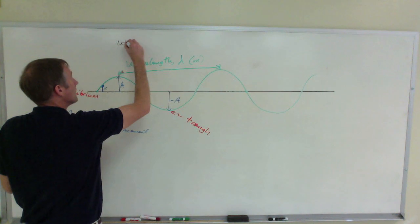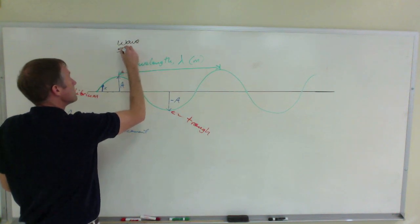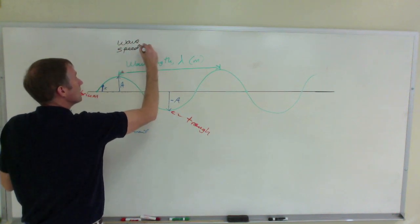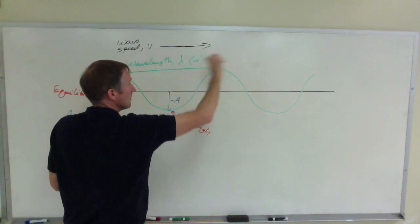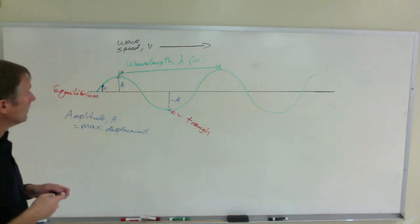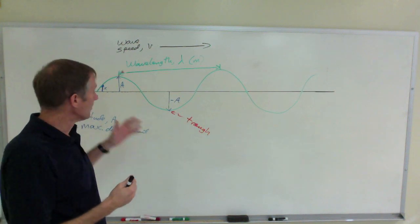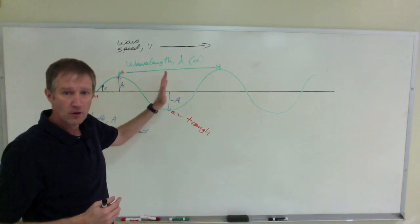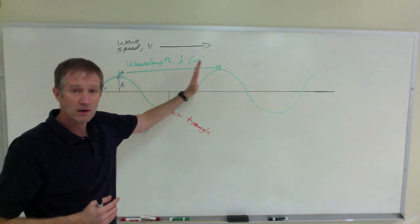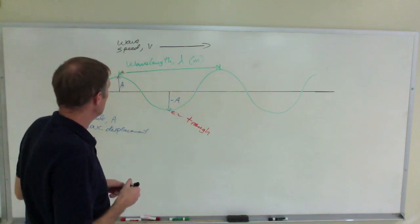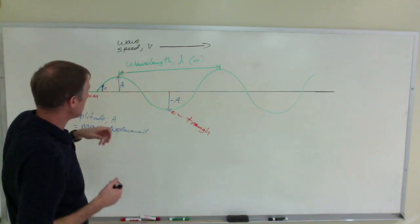All right? It's moving with speed v. So the wave speed v. Let's say that the wave is moving that way. So as you stand here, the waves going along. You see the crest moving along and so forth. So a couple other characteristics.